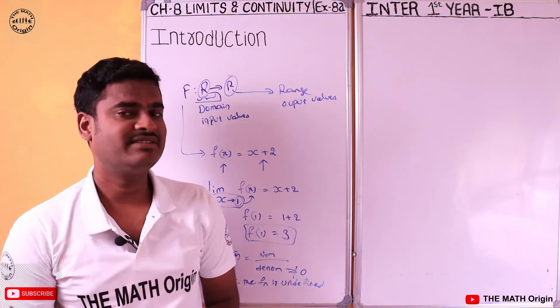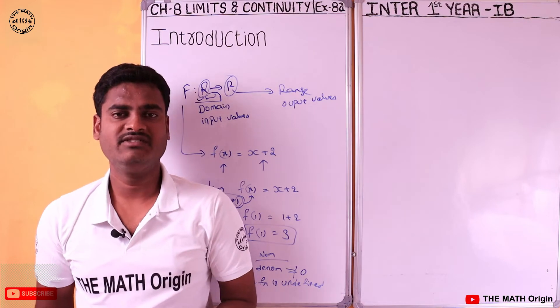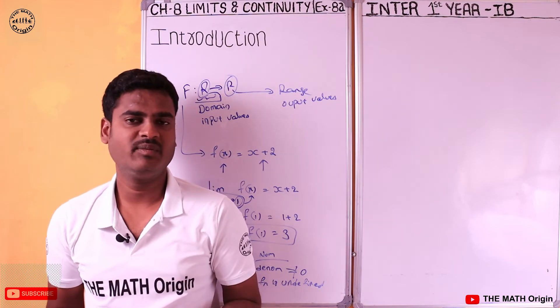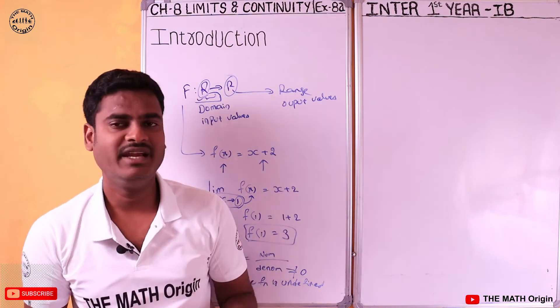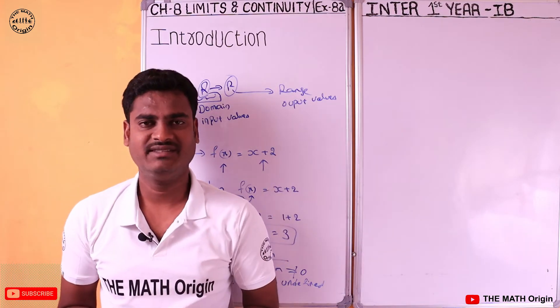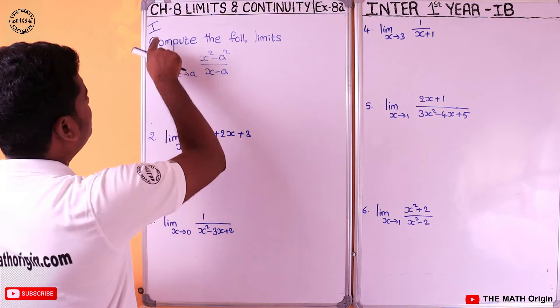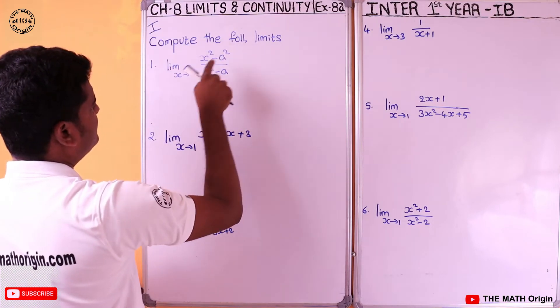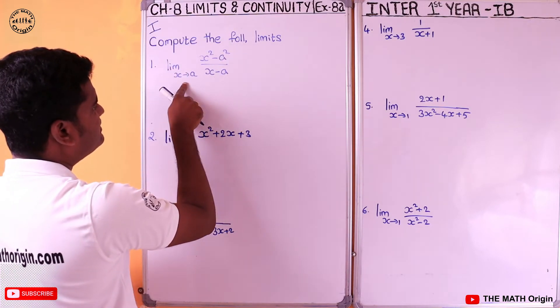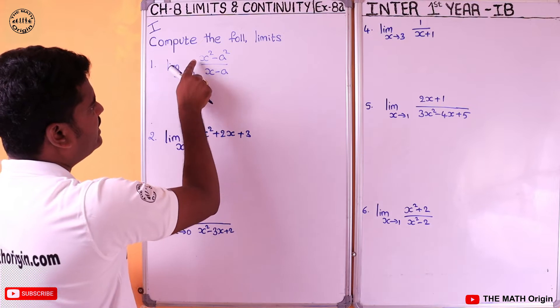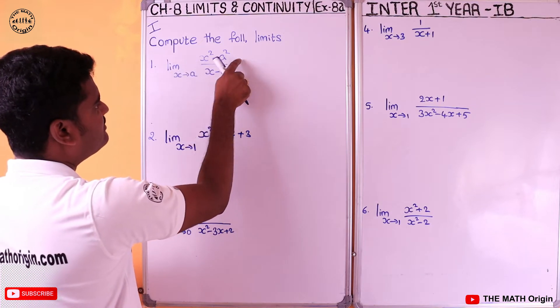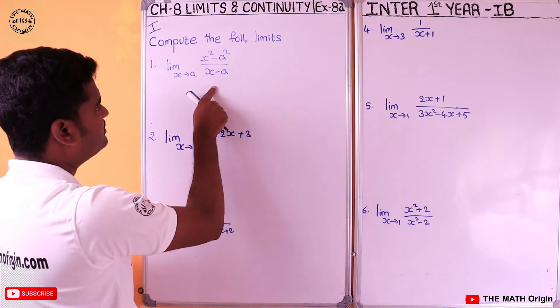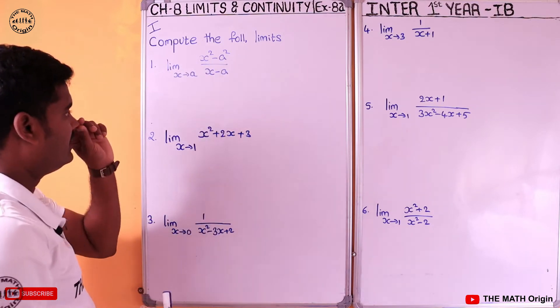Let us jump into the exercise problems and resolve each and every problem from this 8th exercise. First question from the first section: compute the following limits — limit x tends to a of (x² - a²) by (x - a).